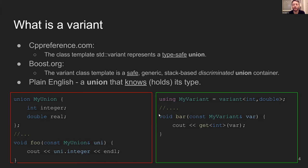So first of all, what is Variant? A Variant is very much like a union. CPP reference says that it's a type-safe union. Boost.org has boosted unions for a very long time — they call it a safe, generic, stack-based, discriminated union. Basically it's just like a union that we all remember from C, but it also knows the type it currently holds. That makes it much safer because we don't need to guess what type it is.